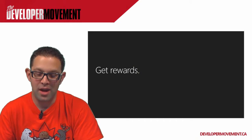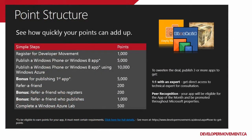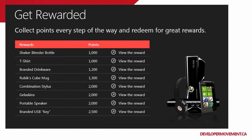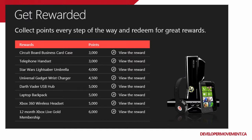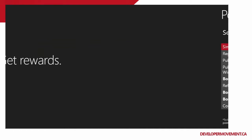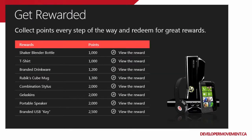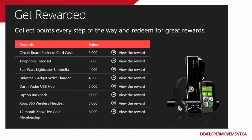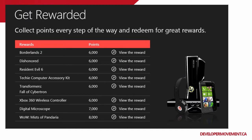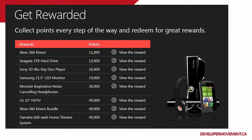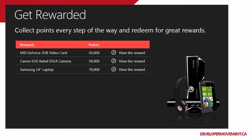The nice thing is that you get rewards for doing that. The way the rewards break down is very simple: you register for the Developer Movement at developermovement.ca — very quick form to fill out. You get a thousand points just for signing up. Then you publish your first phone app or Windows 8 app and you get five thousand points, and the points keep building from there. You can see on the screen some of the things you can get with those points — anywhere from a simple shaker to an Xbox 360 wireless headset to home theater systems and so forth. The more points you rack up, the larger the rewards, like that Samsung 14-inch laptop.